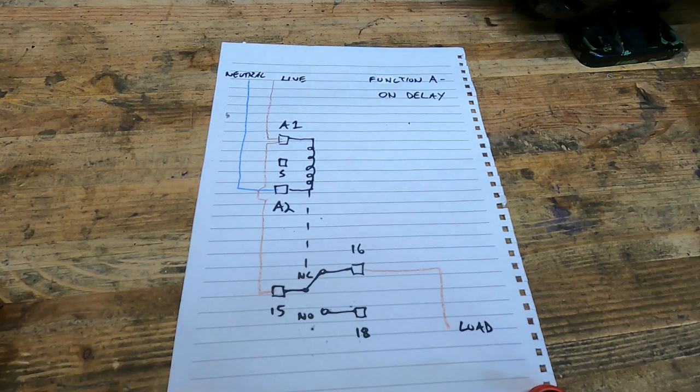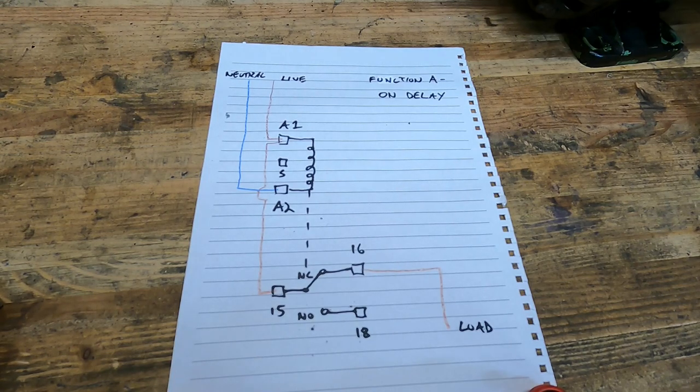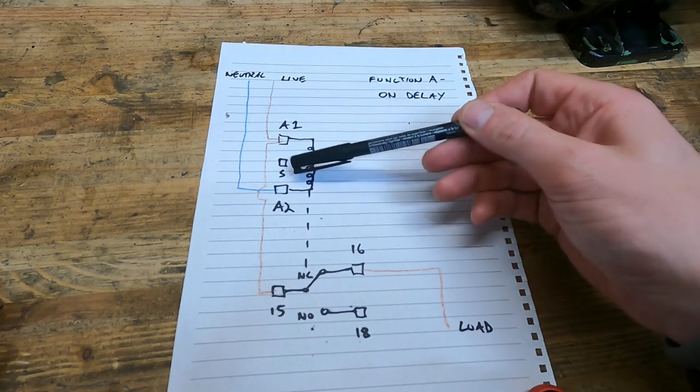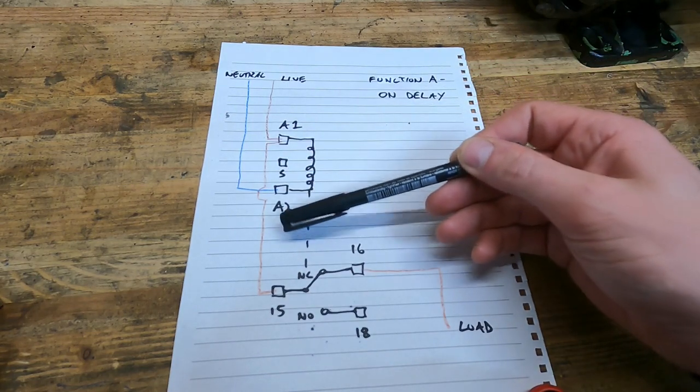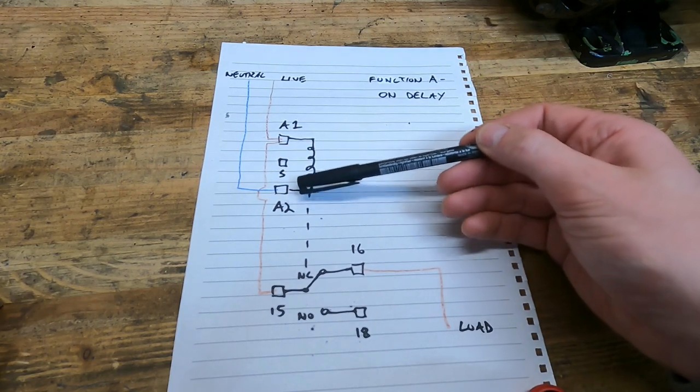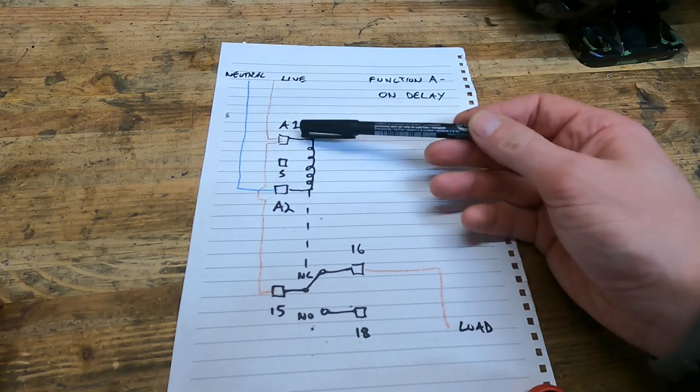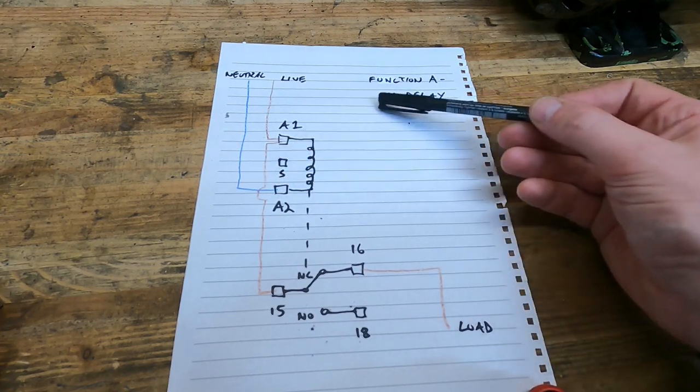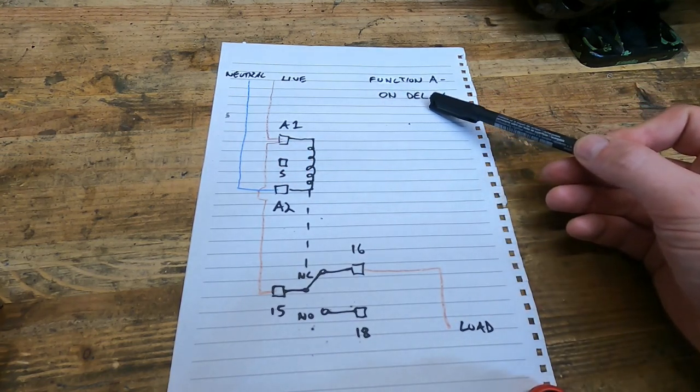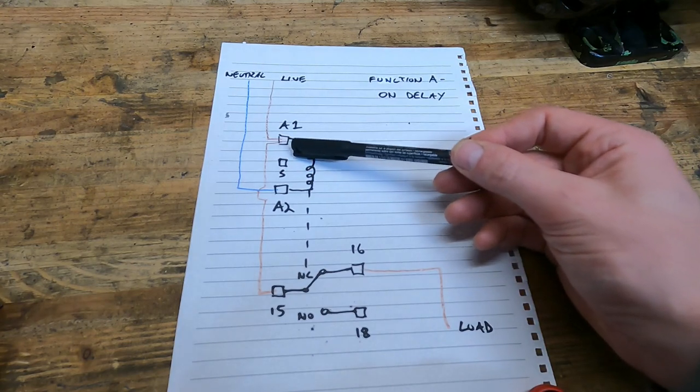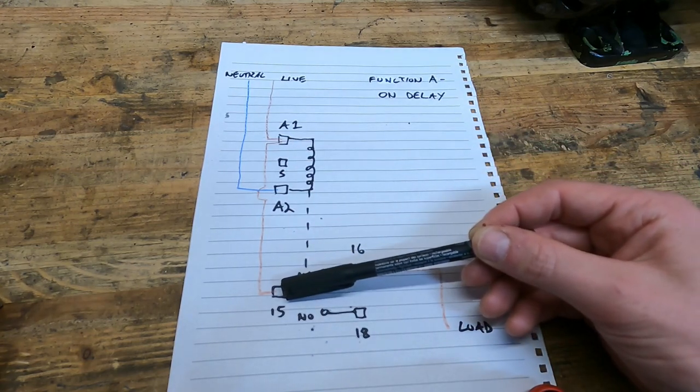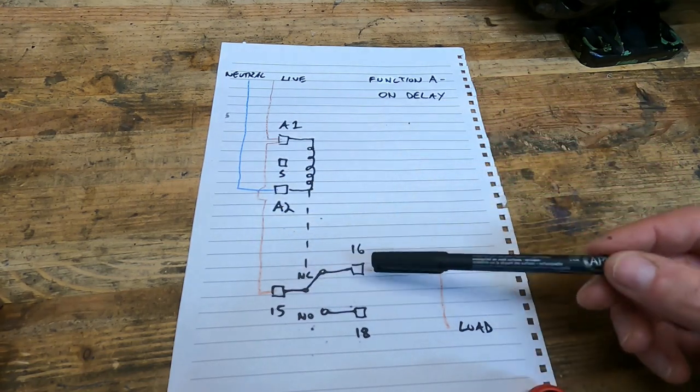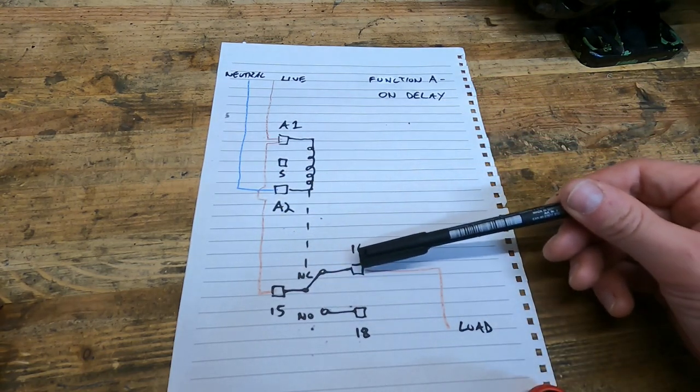I thought it'd be worth spending a minute explaining how this time delay relay works. So we have four terminals on the input side: A1, S, A2, and 15. A1 and A2 are the live and neutral for the coil. S is a trigger switch which we don't need with the function that we're going to be using—function A on delay. Terminal 15 needs a live feed from A1.